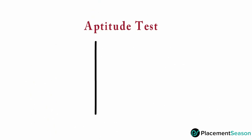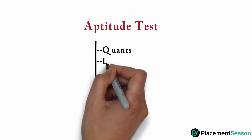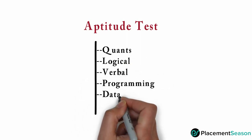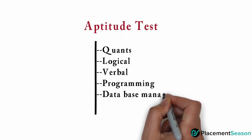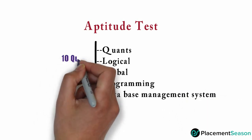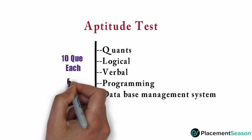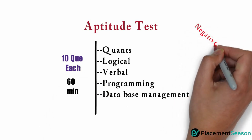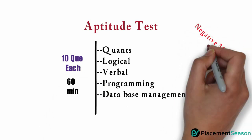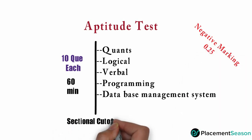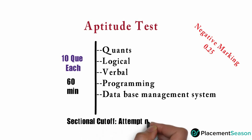For the aptitude round, there are five sections: quantitative, logical, verbal, programming, and DBMS. Each section has 10 questions and the overall time limit is 60 minutes. Note that there is negative marking of 0.25 marks, so be careful. Sectional cutoff will be there, so attempt a minimum of seven questions from each section.